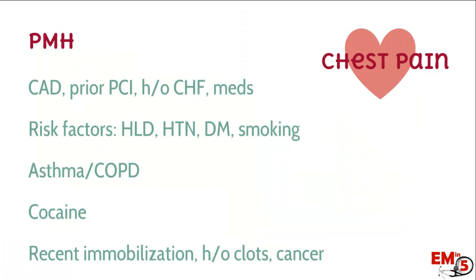Other things I always ask patients with chest pain relate to past medical history. Ask about prior cardiac history and risk factors such as smoking, diabetes, and hypertension. If they're complaining of shortness of breath, ask about asthma or COPD. Ask about drug use, especially cocaine. To think about risk factors for PE, ask about recent immobilization, leg swelling, history of clots, and cancer.